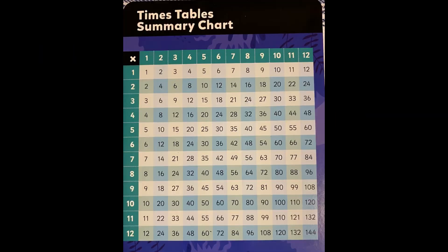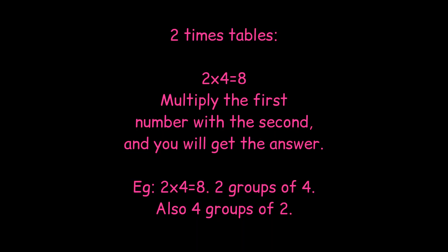An example of a multiplication table is the two times tables. To use the table, you need to multiply the first number with the second number and you will get the answer. For example, two times four equals eight, which is two groups of four. And when you turn it around, it is also four groups of two.